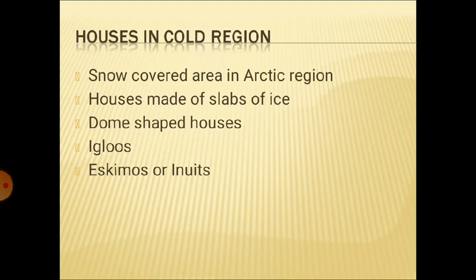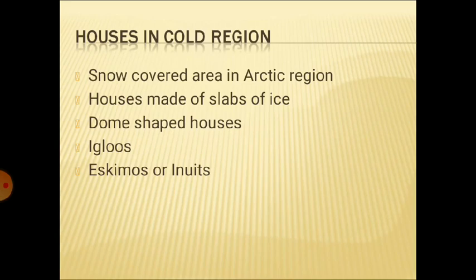People living in Arctic areas make houses using slabs of ice. They cannot use wood, cement, and other things because in areas where heavy snowfall occurs, they use slabs of ice to construct their houses. The shape of these houses is dome-shaped, and do you know what these houses are called? These houses are called igloos. Eskimos or Inuits make igloos and live in them in the Arctic region.